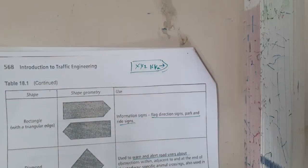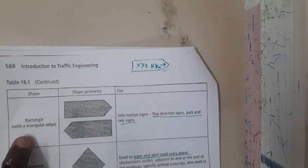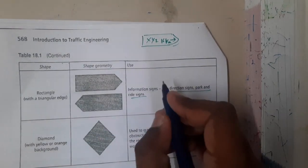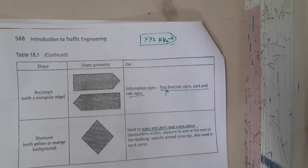If you recall, you have somewhere observed them. Those are nothing but the rectangle with the triangle shapes. These are used to flag the direction signs of park and ride signs.